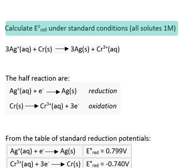In these next couple examples, I want to show you how to calculate E°cell under standard conditions. E°cell is the cell potential or voltage for an electrochemical cell. Standard conditions are 25 degrees C and all solutes start at 1 molar.